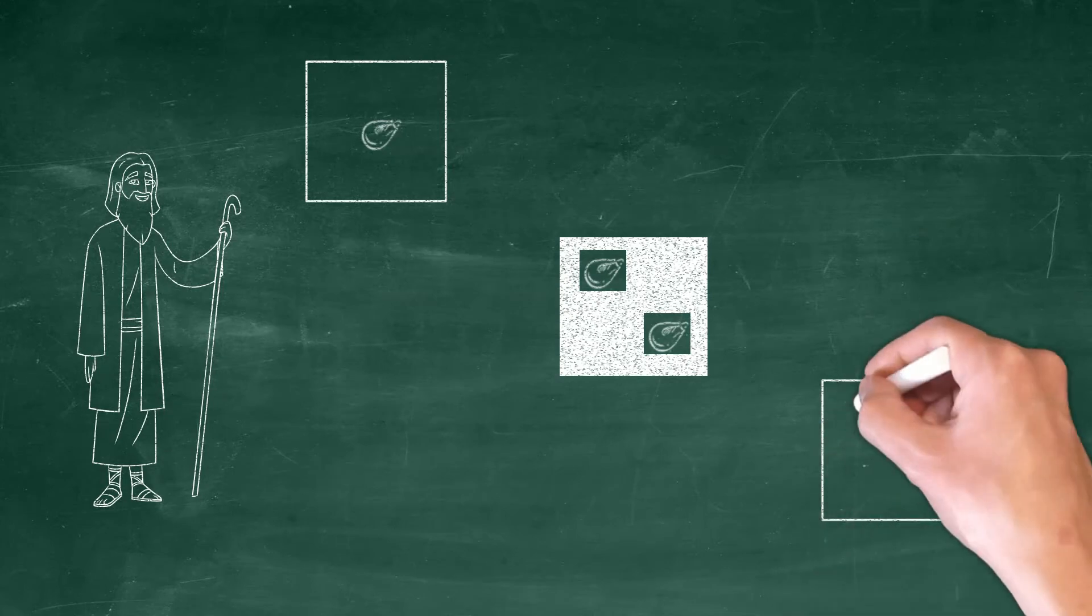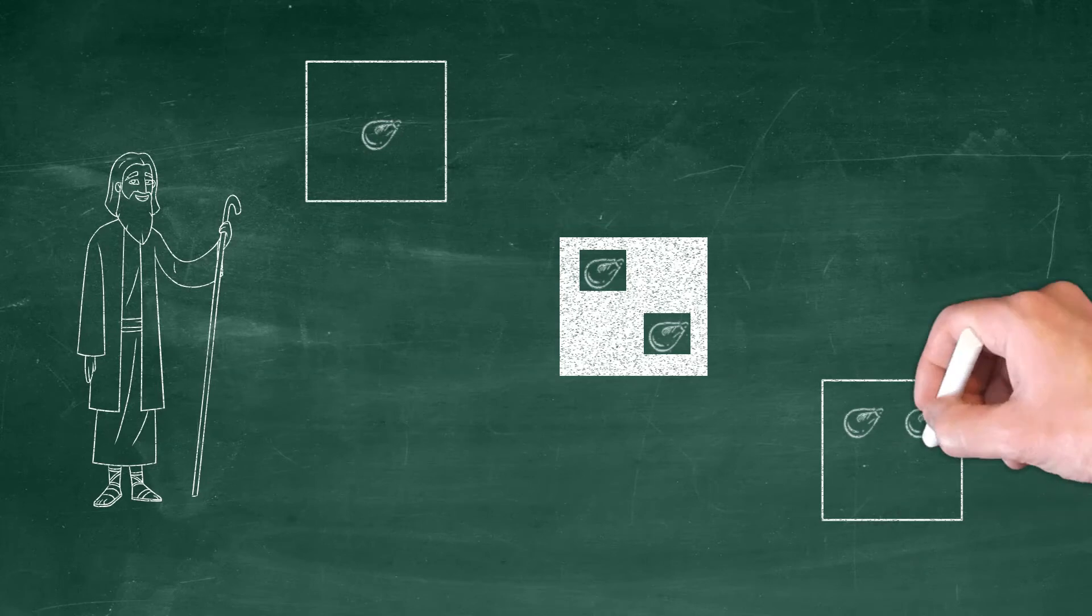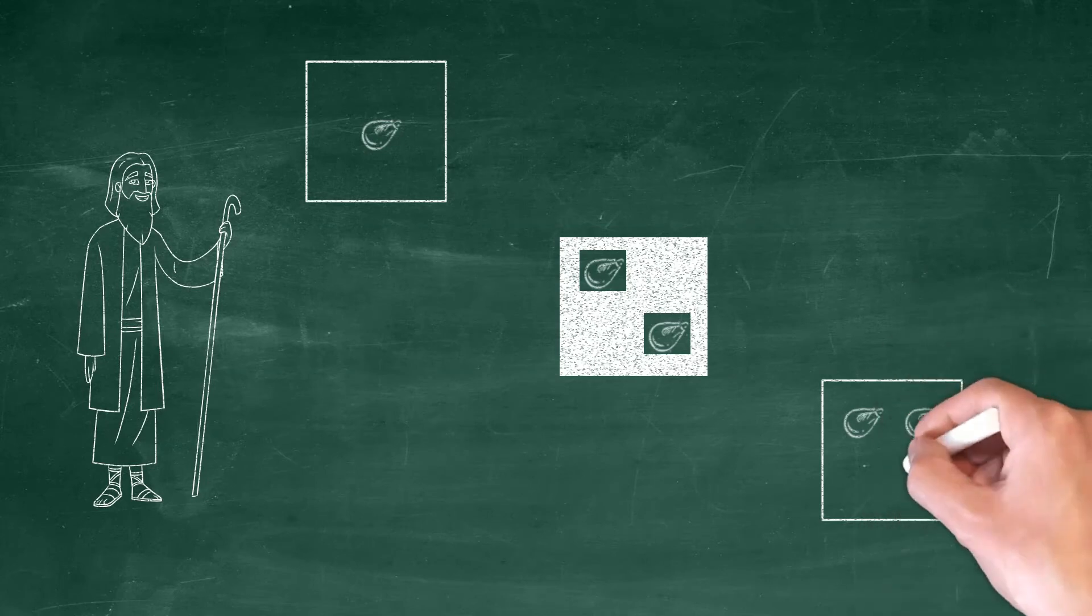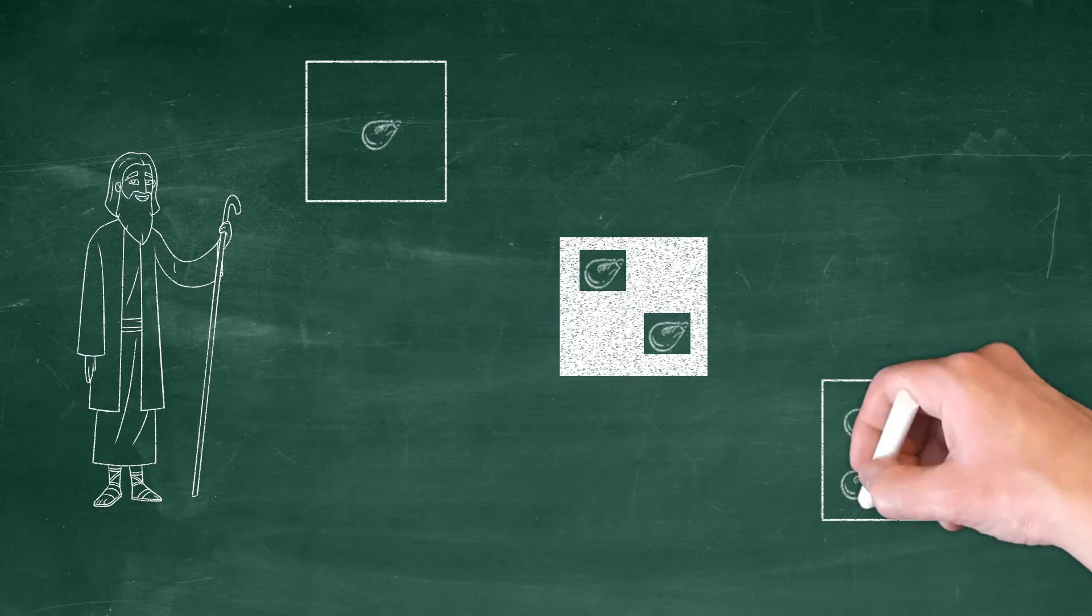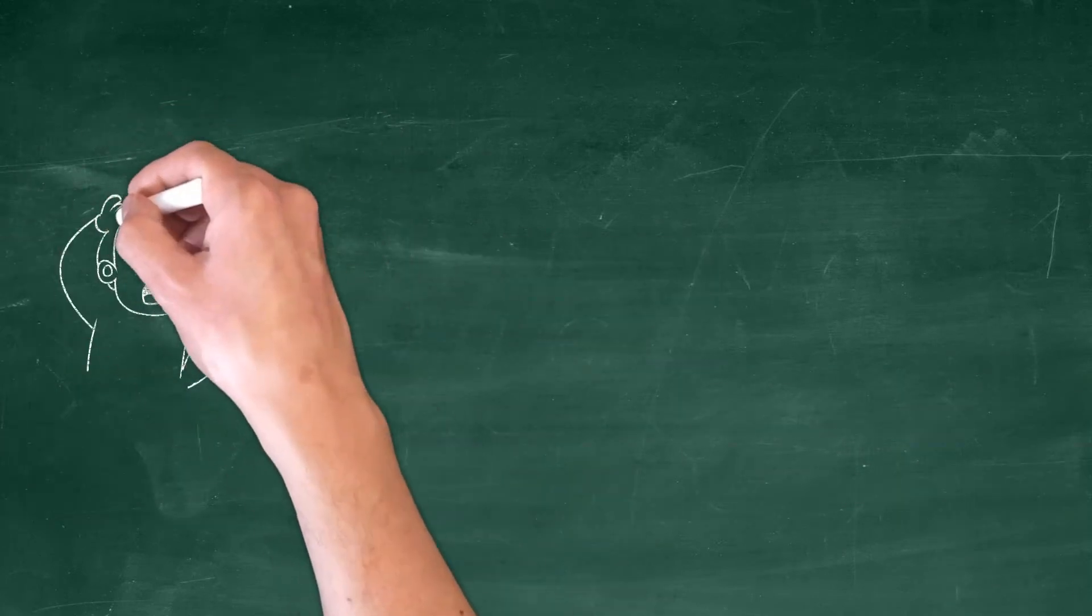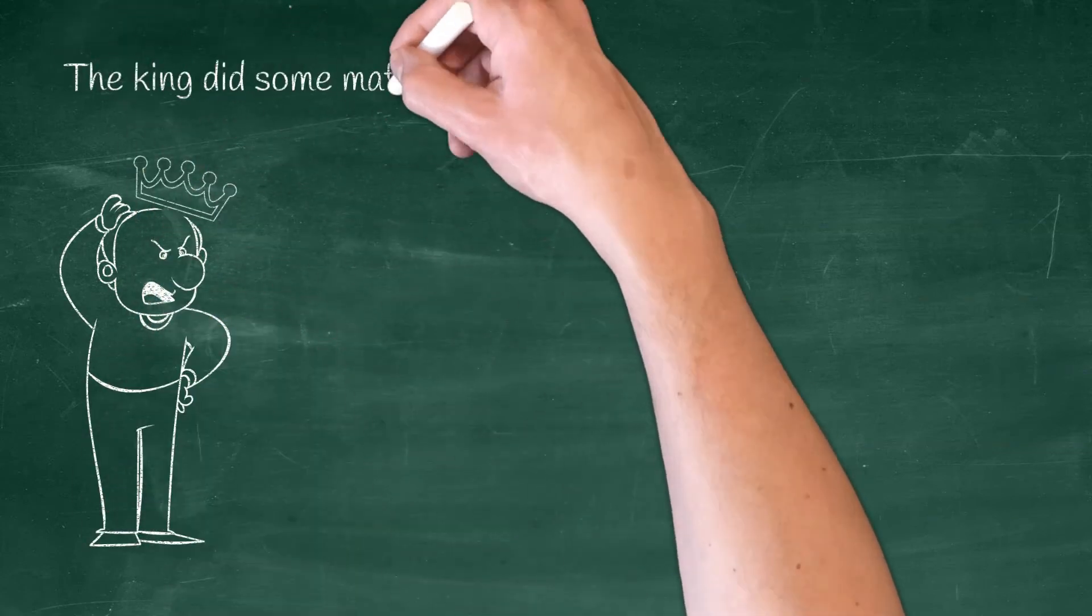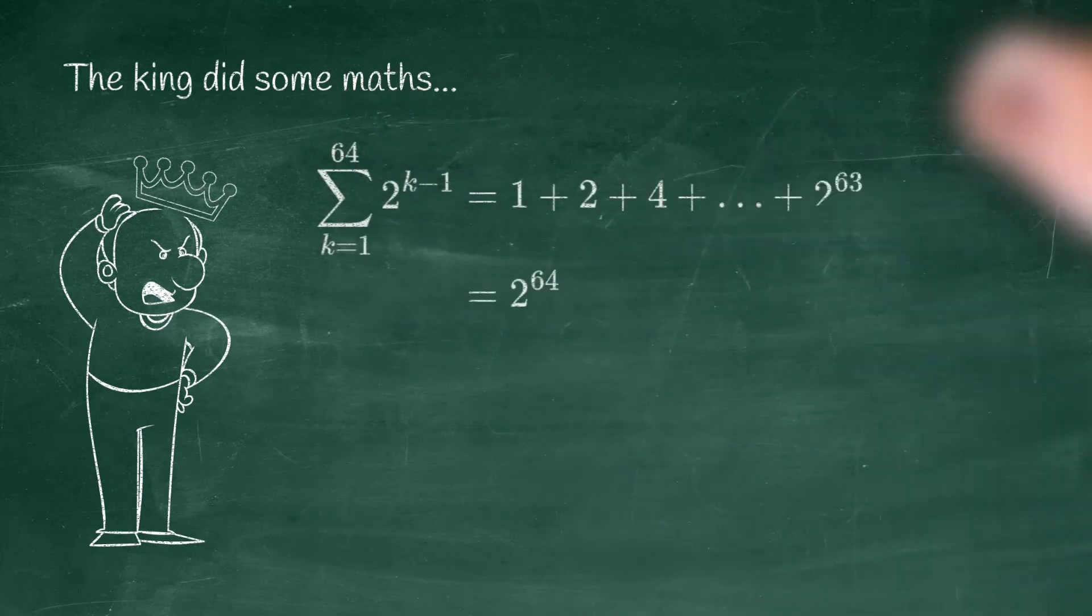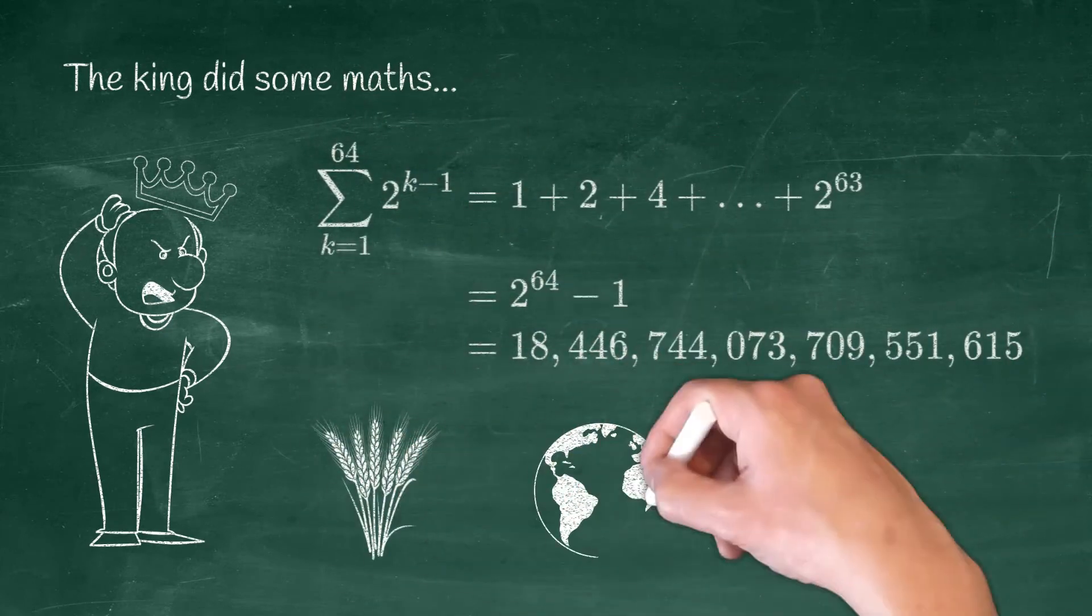The reward seems trivial for the king until he does the actual maths - or more likely the royal mathematician does it for him. After quickly noticing it is a geometric series, they find that the reward amounts to all of the wheat of the world for several seasons.